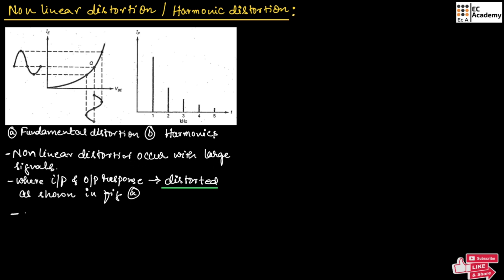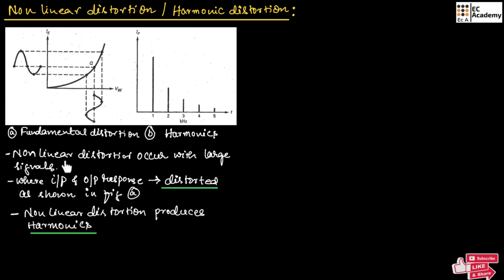These non-linear distortions produce harmonics. So, non-linear distortion occurs due to large signals, and these non-linear distortions produce harmonics.